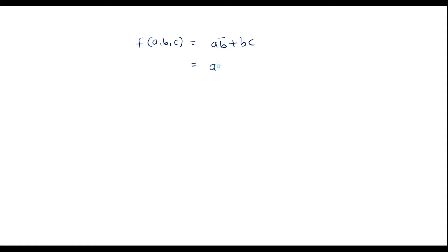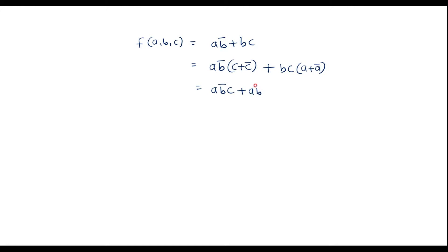I can simplify this as a·b'. I will try to add the variable c as (c + c'), because c + c' equals 1, which keeps the expression the same: a·b'·(c + c'). For the second term b·c, the missing variable is a, so I can add it as (a + a'). Expanding further: a·b'·c + a·b'·c' + a·b·c + a'·b·c.